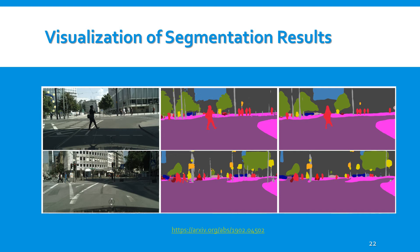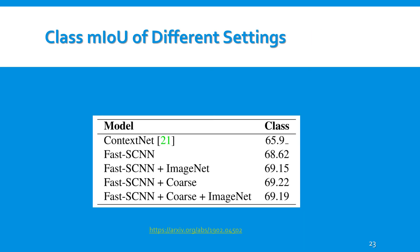The first column shows RGB images, the second column displays Fast SCNN outputs, while the third column shows Fast SCNN results without the skip connection. Boundaries in smaller objects are captured better in the second column. This also presents Fast SCNN performance with and without pre-training and weakly labeled data. The idea suggested here is that neither ImageNet pre-training nor weakly labeled data are significantly beneficial for the Fast SCNN model.